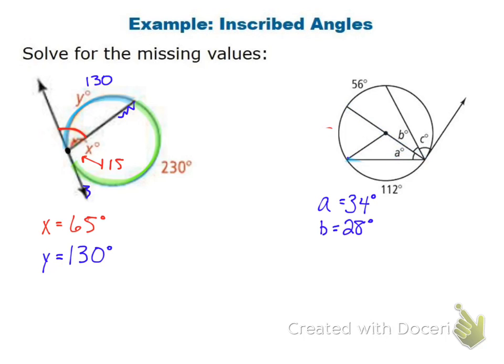For angle C: this 56-degree arc is made by a diameter, so the two arcs must equal 180. So 180 minus 56 gives me 124. Since C is an inscribed angle, it is going to be half of that, so C ends up being 62.